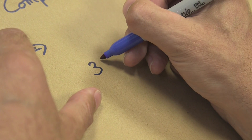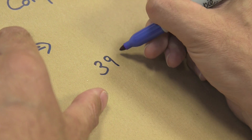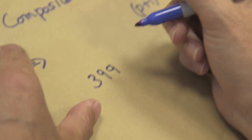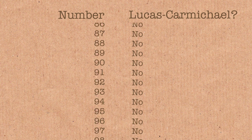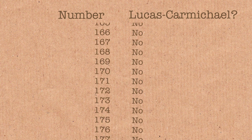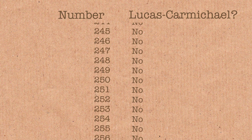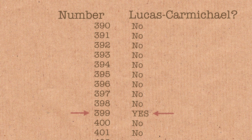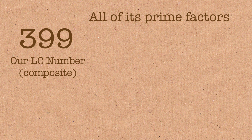The smallest value n can have is 399. There are 398 numbers before it that don't satisfy this. So what are the prime factors of 399? Well, it's 3 times 7 times 19.